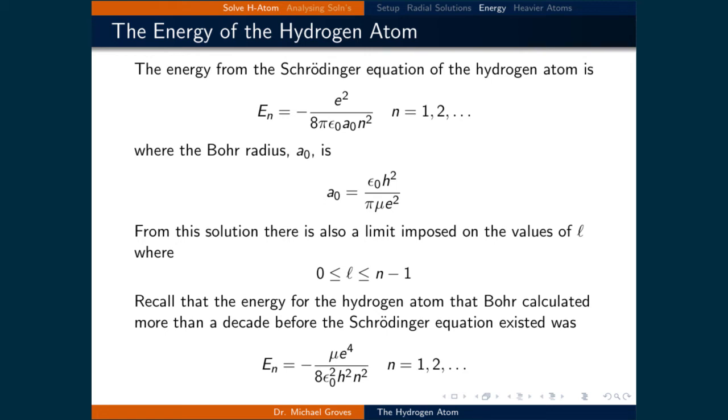The energy from the solution to the Schrödinger equation for the hydrogen atom is negative e squared over 8π epsilon naught a naught times n squared, where n is restricted to being a positive integer due to conditions imposed by the solution to the differential equation.